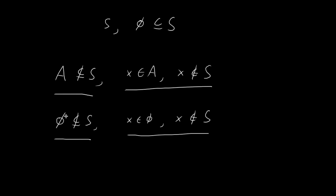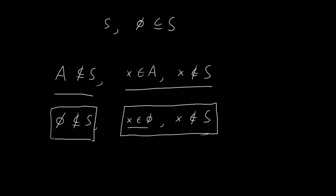But since there are no elements in the empty set, we cannot demonstrate this — because this statement is always false. We cannot find an element that is in the empty set but not in the set S. And since we cannot demonstrate this, we cannot conclude that the empty set is not a subset of S. So it must be the case that the opposite is true: the empty set is a subset of S. And that's how we can conclude that the empty set is always a subset of any set S.